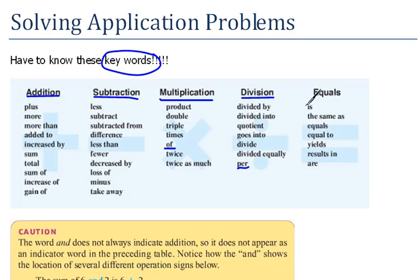Then we also have keywords for equals. So whenever we say things like is, or the same as, results in, those are keywords that mean equals. So if you need to, if you don't have a textbook or something that has these keywords in it, you might want to pause the video and just write these down because these are very, very important to know before you move on.